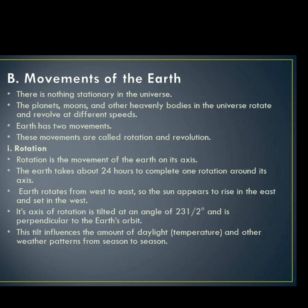Rotation is the movement of the earth on its axis. It takes about 24 hours, or one day, to complete one rotation around the axis. The earth rotates from west to east, and as a result, the sun rises in the east and sets in the west.